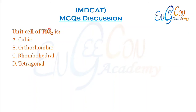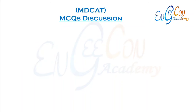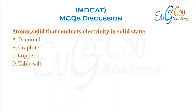Unit cell of TiO2 is tetragonal (rutile), as given in the textbook table. For atomic solids that conduct electricity in solid state: atomic solid means covalent solid. Among all covalent solids, graphite is the one that conducts electricity in solid state. So B is the correct option.